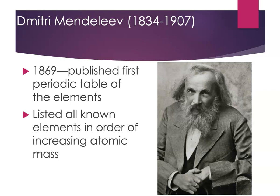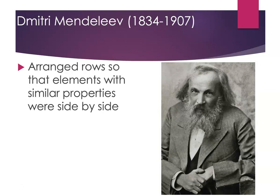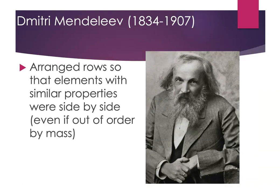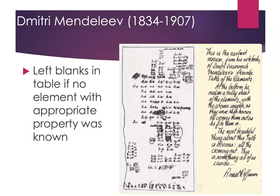What Mendeleev did was list all the known elements in order of increasing atomic mass. He had an exhaustive knowledge of the elements and was really trying to fit them together into a pattern, using atomic mass information to help. He also arranged his rows so that elements with similar properties were next to each other in his table, even if that meant they were out of order by mass — so he let their properties trump the mass sequence. He also left blanks in his table if an element seemed to be missing, and predicted the properties of those missing elements as well.